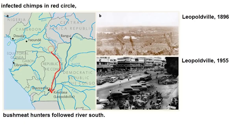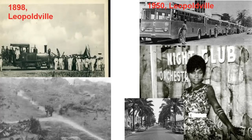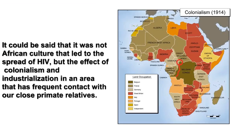What was going on in the 1950s in Africa? Urbanization, for one. The cities of equatorial Africa experienced a population boom after World War II, along with colonial expansion. The world wanted the raw resources in Africa and needed local labor to extract it. This led to a disruption of traditional lifestyles and the rise of a post-industrial culture in a previously agrarian society. Prostitution and drug use may have increased as people left their towns and villages to find profitable work in the growing cities. They probably left their families and close communities behind, and many were no doubt lonely and isolated. It could be said that it was not African culture that led to the spread of HIV, but the effect of colonialism and industrialization in an area that had frequent contact with our close primate relatives.